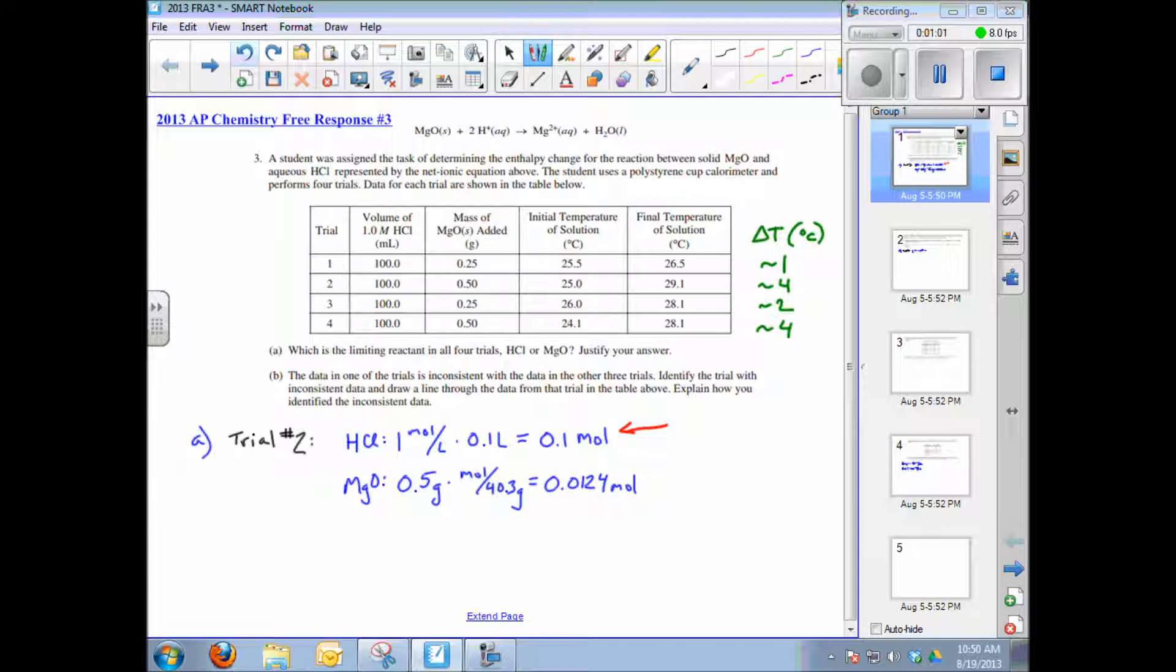So that calculation is shown here: molarity times volume equals number of moles. In all four trials, it's 0.1 mole. For magnesium oxide, I chose trial two or trial four, which are the same, because it has the highest mass of magnesium oxide. This is just mass divided by the molar mass.